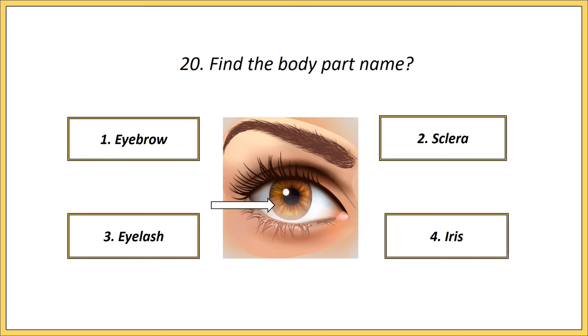Twentieth one. Find the body part name. Options: eyebrow, sclera, eyelash, wrist. Answer is wrist.